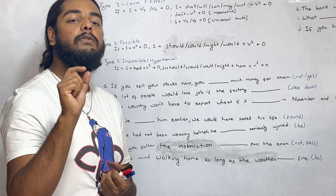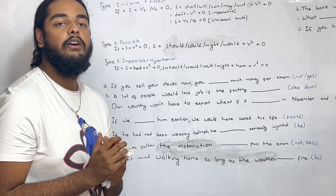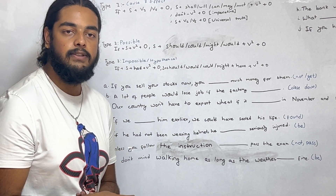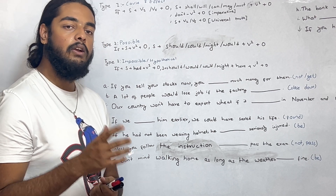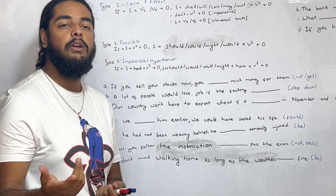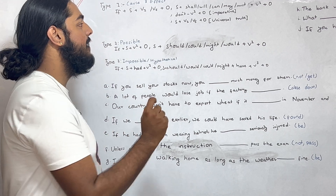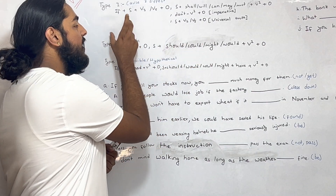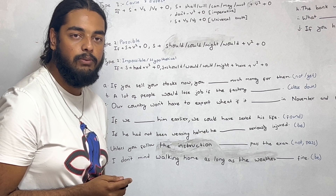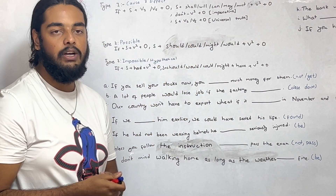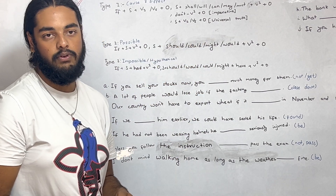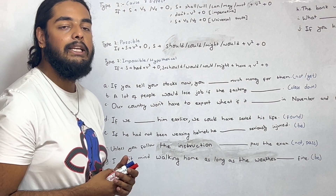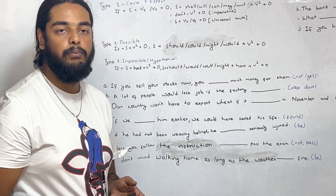Type zero: subject at the end of the sentence — command, order, request, suggestion, advice — imperative sentence. The third possible case: if simple present, main clause simple present. That is for universal truth, just like: if water is heated, it boils.